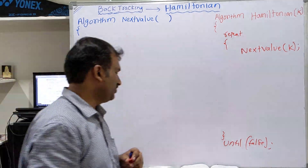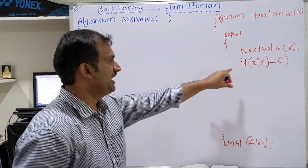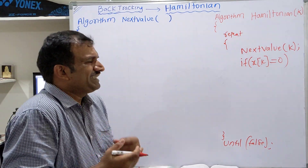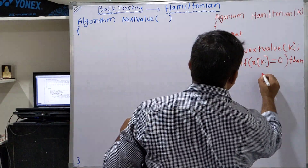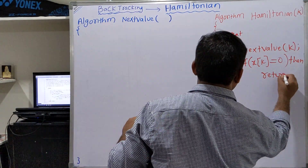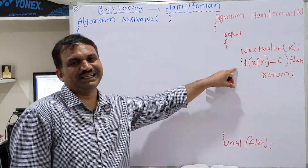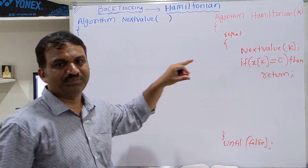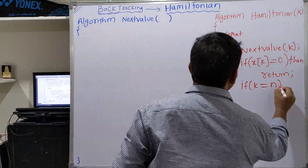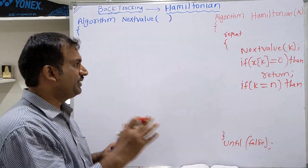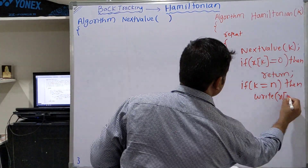In Algorithm Next Value, we check whether we found the next vertex. If x[k] equals 0, that means we didn't find any vertex to visit — so we backtrack by returning. If we did find a vertex, we check if k equals n, meaning we've completed all vertices. If so, we print the solution vector x.